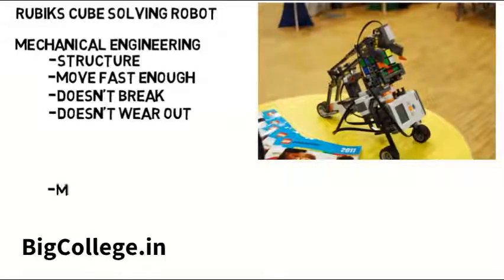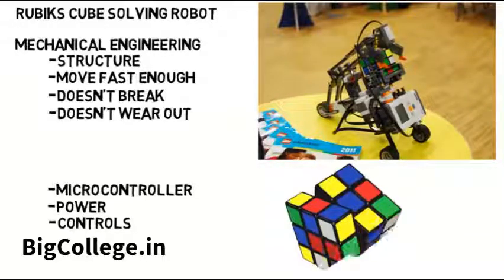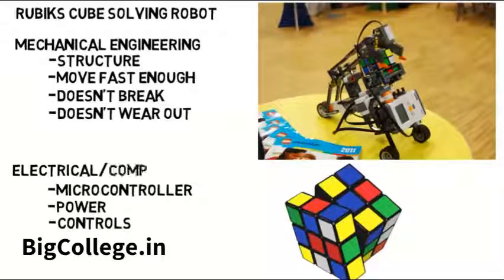If you want to be responsible for making sure the microcontroller works properly and powers the robot to move, plus ensuring the controls work such as the electric signals produced turn the sides of the Rubik's cube properly, because you wouldn't want to overturn it because then you couldn't turn another side, then electrical or computer engineering might be right for you.